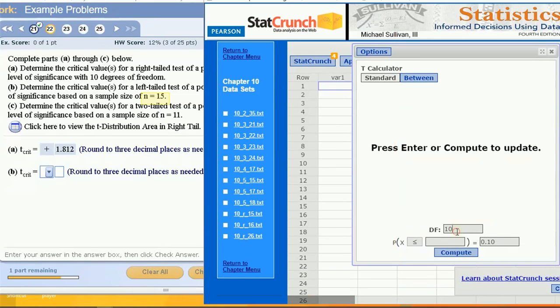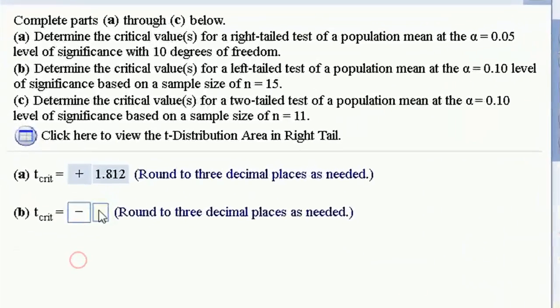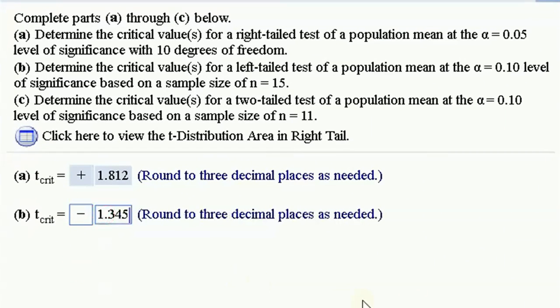For these one-sample population mean tests, the degrees of freedom is one less than the sample size. 15 minus 1, 14. That's what I want. Set my alpha, set everything, and I got it. I'm going to take, again, three decimal places, but I'm going to put the negative sign in the first pull-down. Negative 1.345.